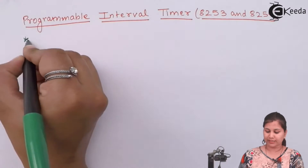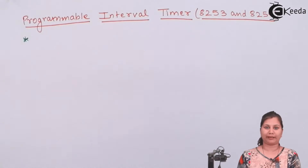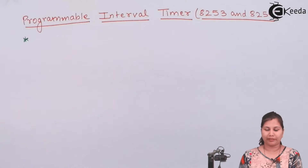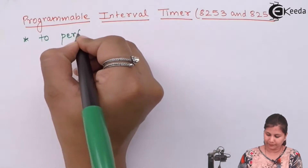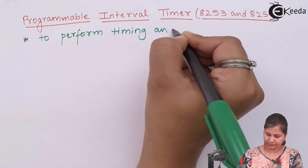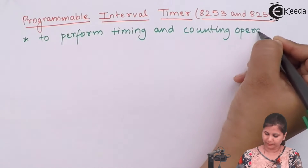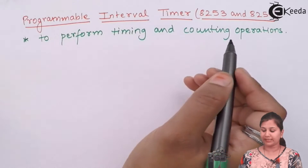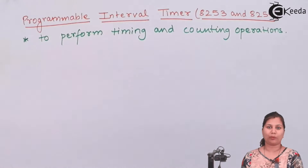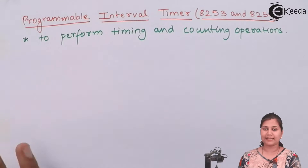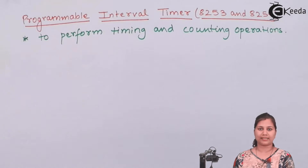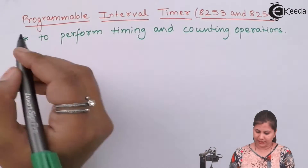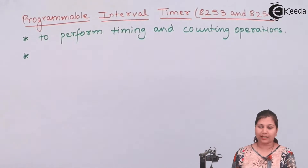The Programmable Interval Timer is used by the microprocessor when it is performing timing and counting operations. As the name suggests, Programmable Interval Timer means that at an interval of some time, it provides a time delay, and this IC is a programmable IC — we can set its modes through software. These ICs 8253 and 8254 count a delay.